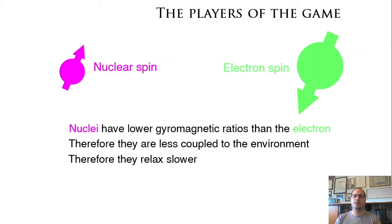Most of you are familiar with nuclear spins. Nuclei have lower gyromagnetic ratios than the electron does, and they are less coupled to the environment, and therefore they relax slowly.